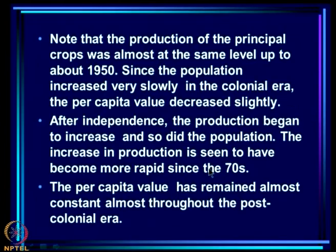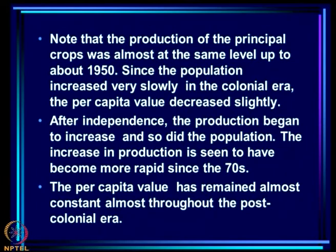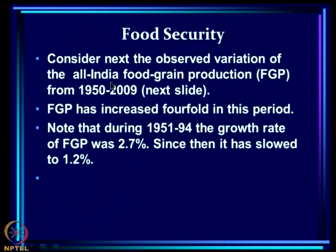The production of principal crops was almost at the same level up to about 1950. Since the population increased very slowly in the colonial era, the per capita value decreased slightly. After independence, the production began to increase and so did the population. The increase in production became more rapid since the seventies, and the per capita value has remained almost constant throughout the post-colonial era.